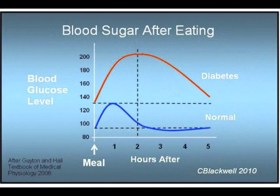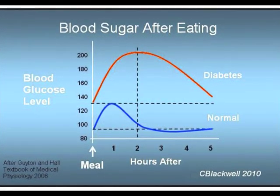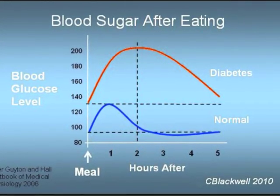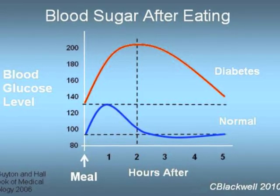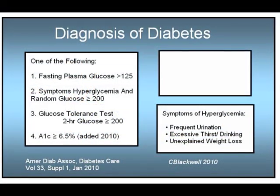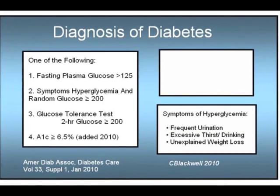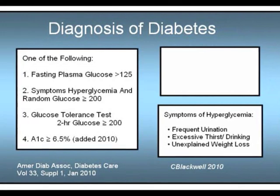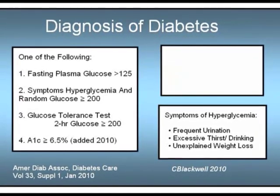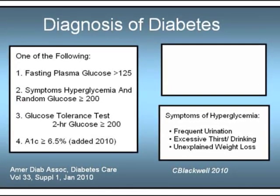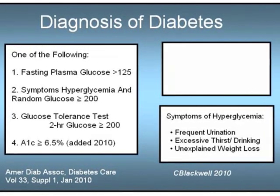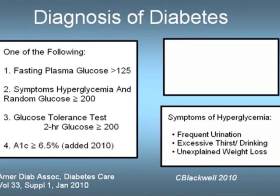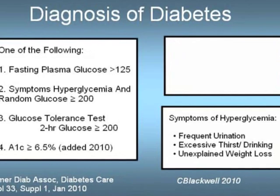To understand the tests used to diagnose diabetes, recall this graph of blood sugar after eating. The most reliable time to distinguish normal from diabetes is either fasting or two hours after eating. Here are the testing standards considered as making the diagnosis: a fasting plasma glucose over 125; a random blood sugar over 200 along with the classic symptoms of drinking lots of fluid, frequent urination, and weight loss; or a glucose tolerance test. A new test has been added by the American Diabetes Association — the A1c test, which we will talk about in a moment.